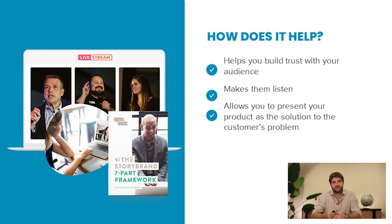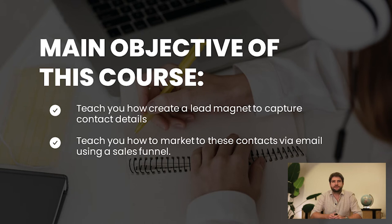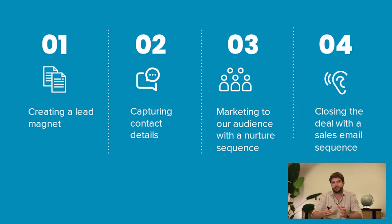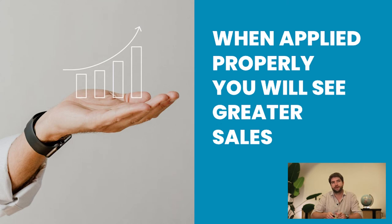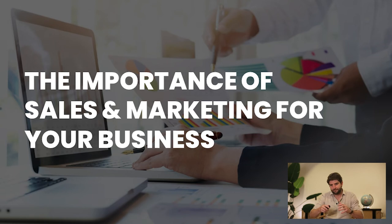We're going to speak to customers in a way that makes them listen, and this will allow you to present your product as a solution to their problem. The main objective of this course is to teach you how to create a lead magnet to capture contact details, and then how to market to those contacts via email using a sales funnel. The process is broken into four parts: one, create a lead magnet; two, capture contact details; three, market to your audience through a nurture email sequence; and four, close the deal with a sales email sequence.